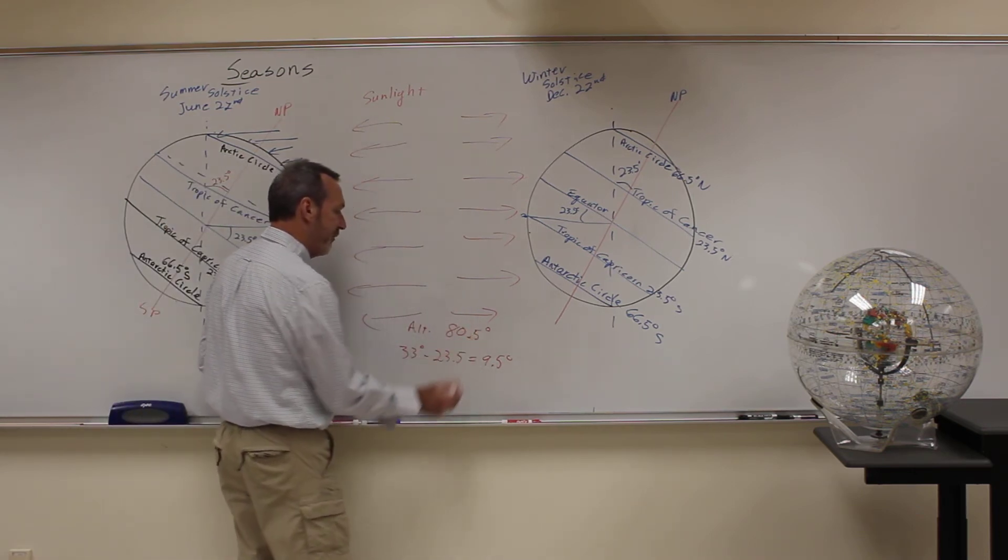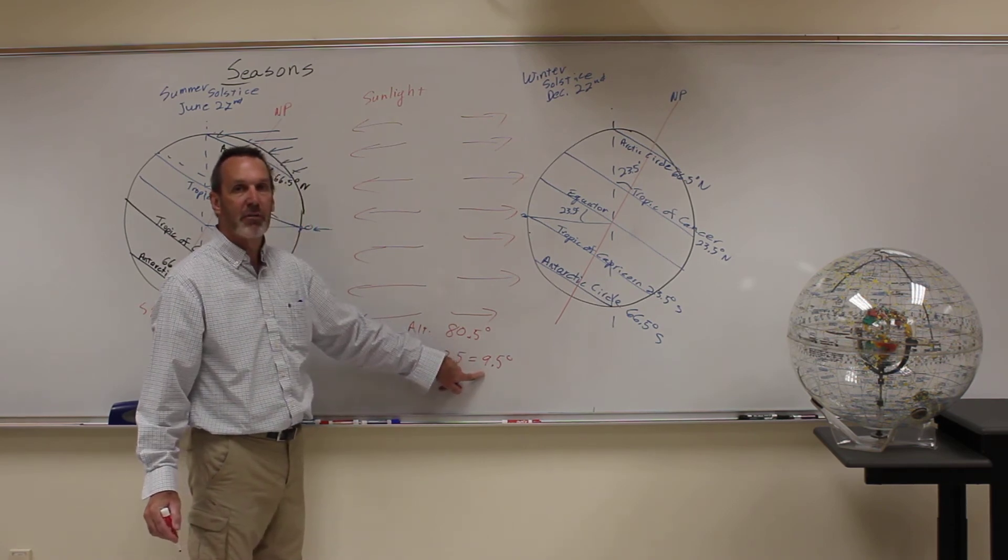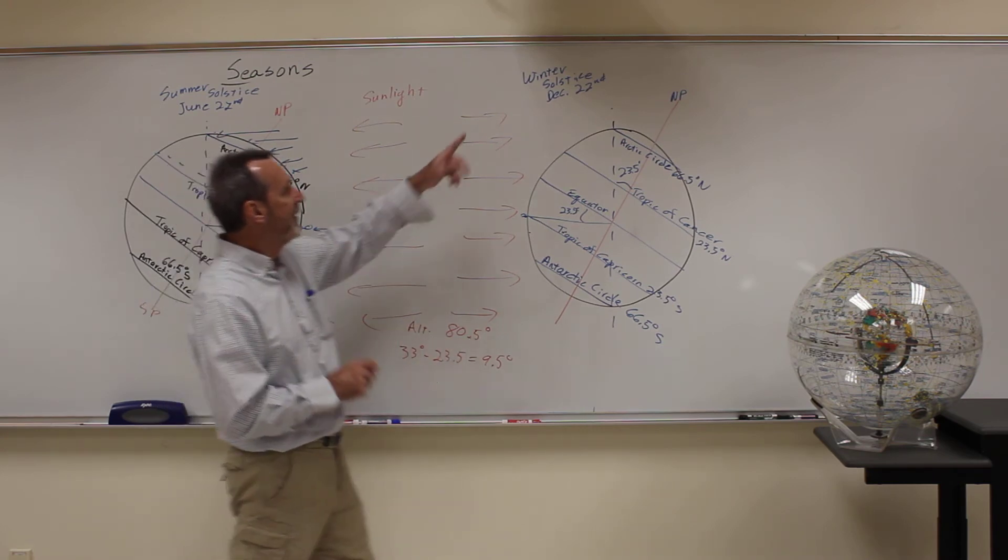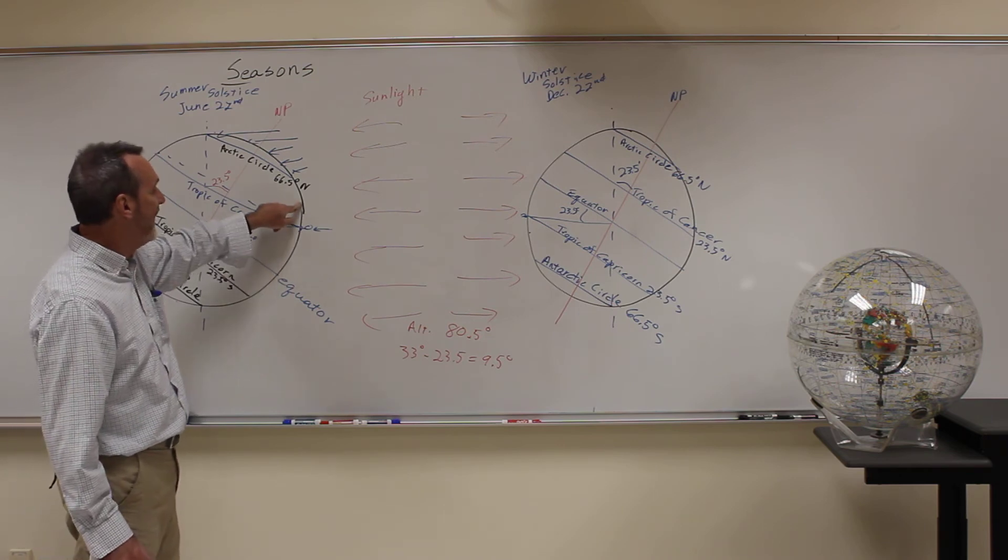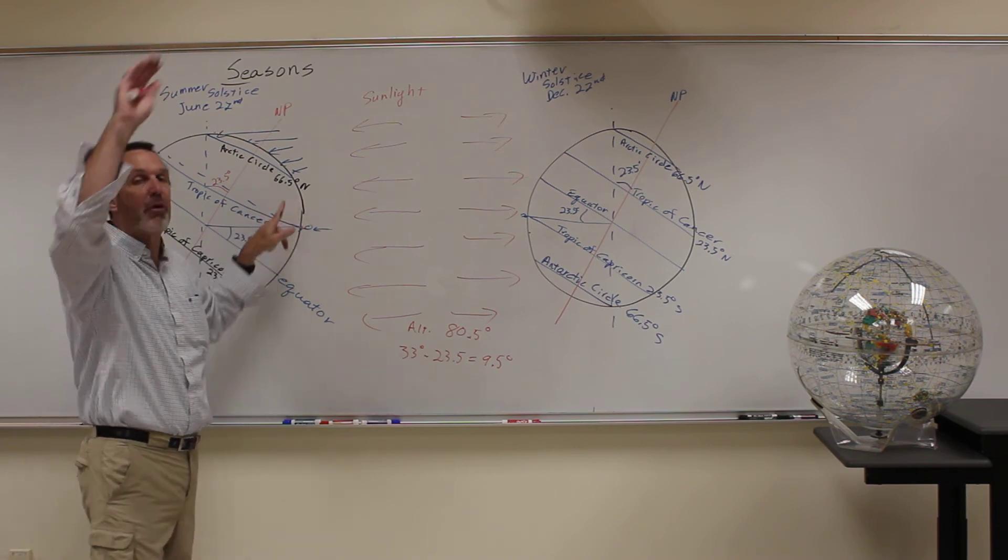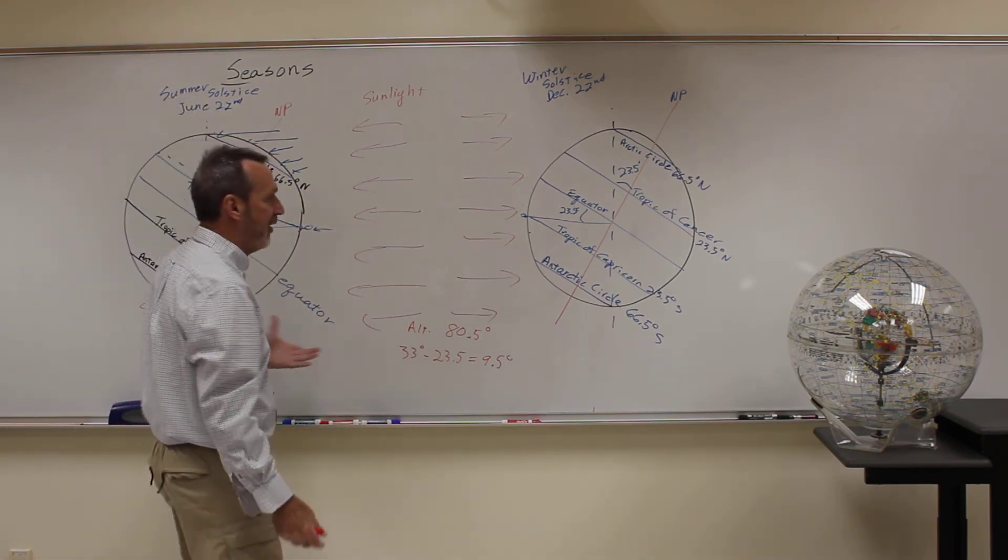80.5. How far is that from 90? It's 9 and a half degrees. So, on June 22nd, over here, the Sun's directly overhead at Tropic of Cancer. We're 9 and a half degrees further up, so the Sun is 9 and a half degrees lower from the zenith. So it all comes together. It all makes sense.